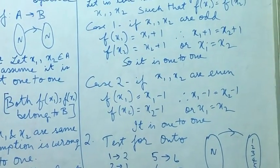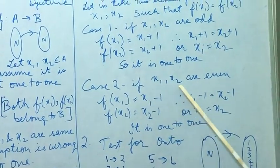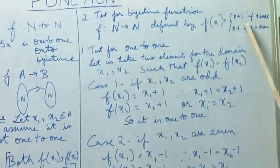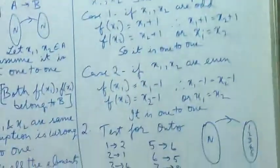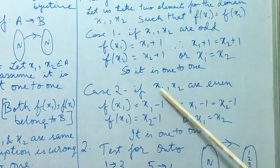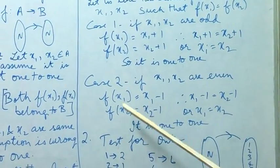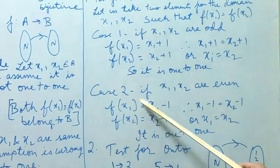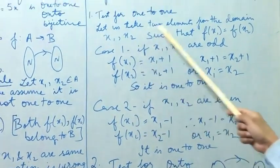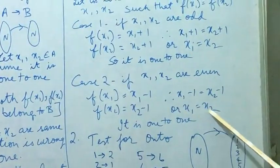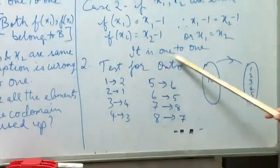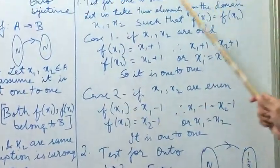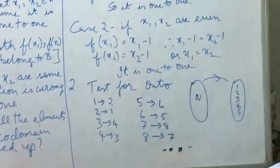Case 2, if x1 and x2 are even. We must remember that we have two different kinds of functions depending upon x being odd or even. If x1 and x2 are even, then f(x1) equals x1 minus 1 and f(x2) equals x2 minus 1. By taking them equal, because that's what we are assuming, we will see that x1 equals x2. Therefore, it is again a one-to-one function. This is the working rule you must learn to prove that it is one-to-one.